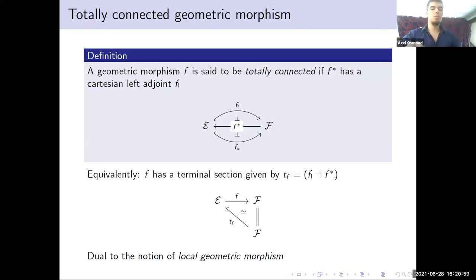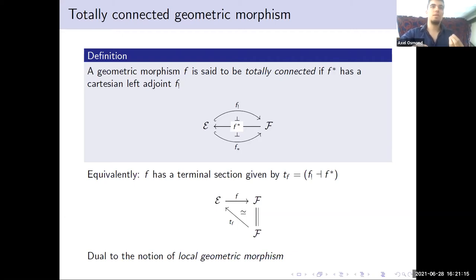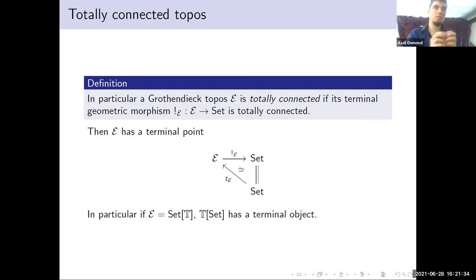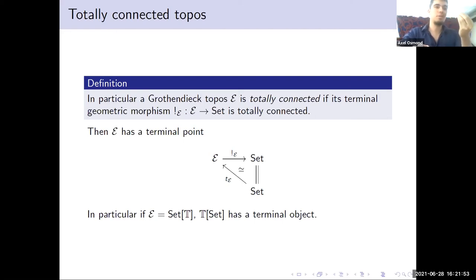This talk is interested in the over-category at a given point, which led us to the notion of totally connected topos. A geometric morphism is said to be totally connected if the inverse image part has a cartesian left adjoint preserving finite limits, and then the pair of adjoints given by this left adjoint and the inverse image is a terminal object in the category of sections of your geometric morphism. A Grothendieck topos is totally connected if its terminal geometric morphism to Set is totally connected, meaning your topos has a terminal point.